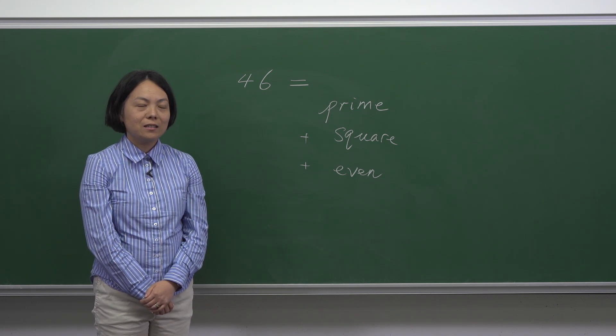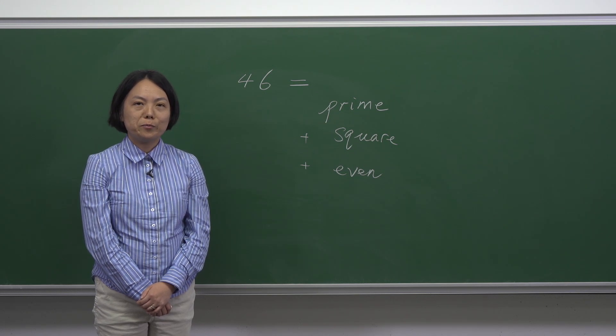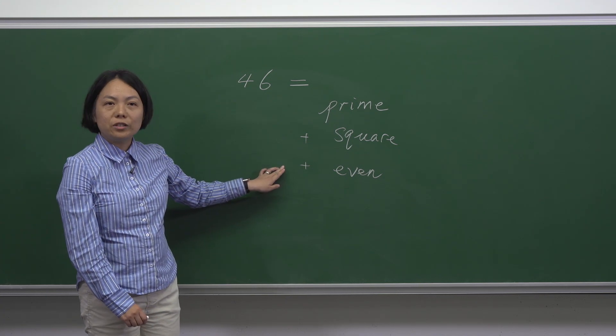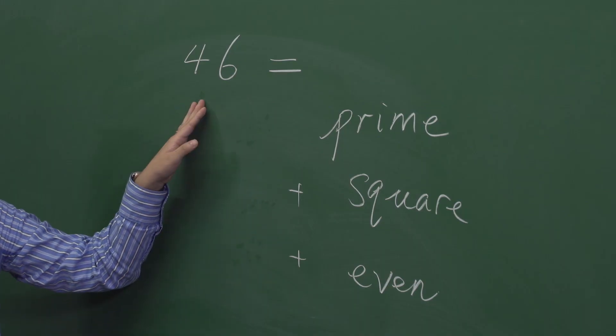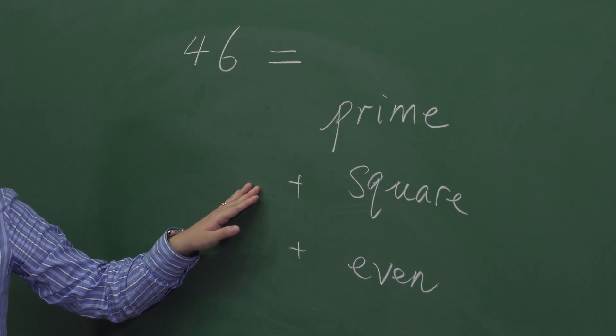We all know that all the two-digit prime numbers are odd numbers. So we have odd plus even, which gives you odd. And 46 is an even number, therefore this square number has to be odd.